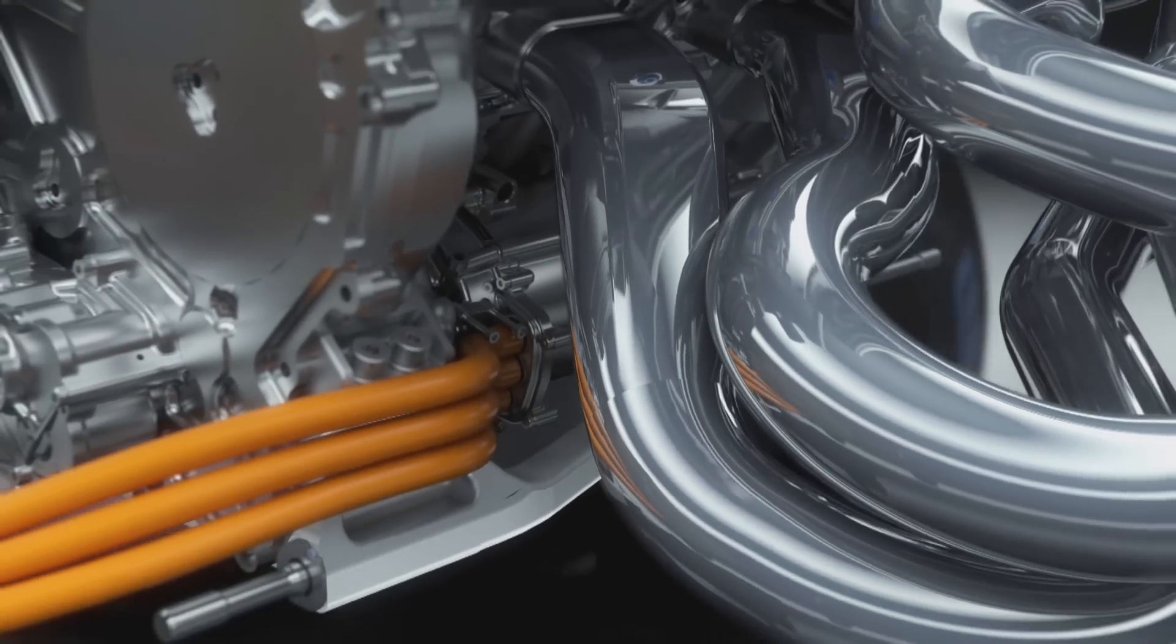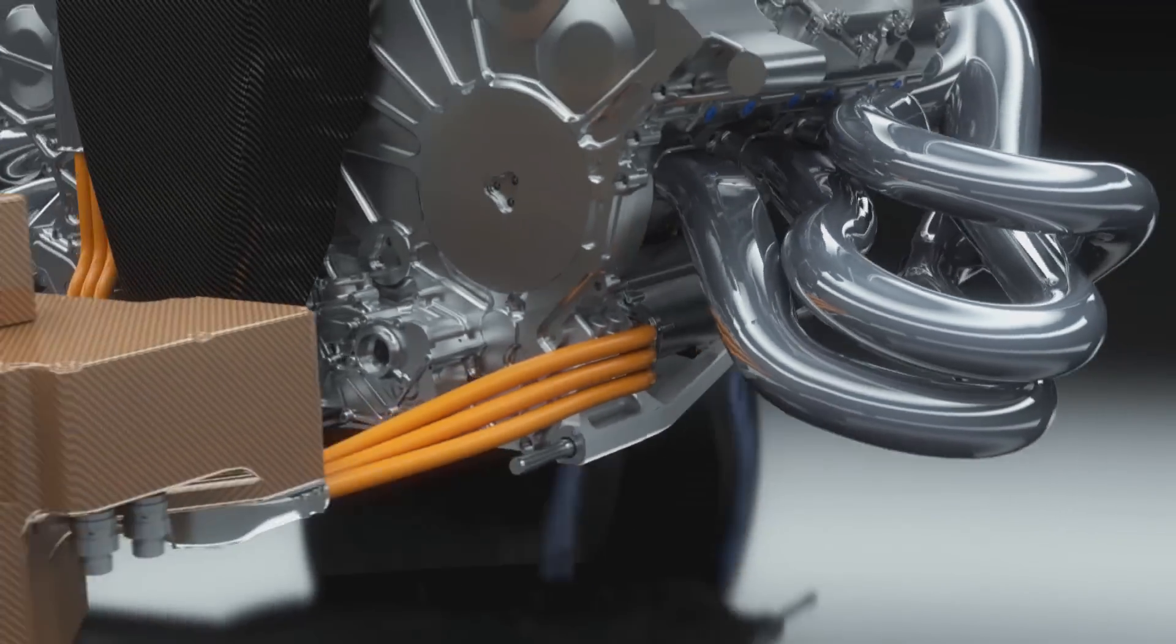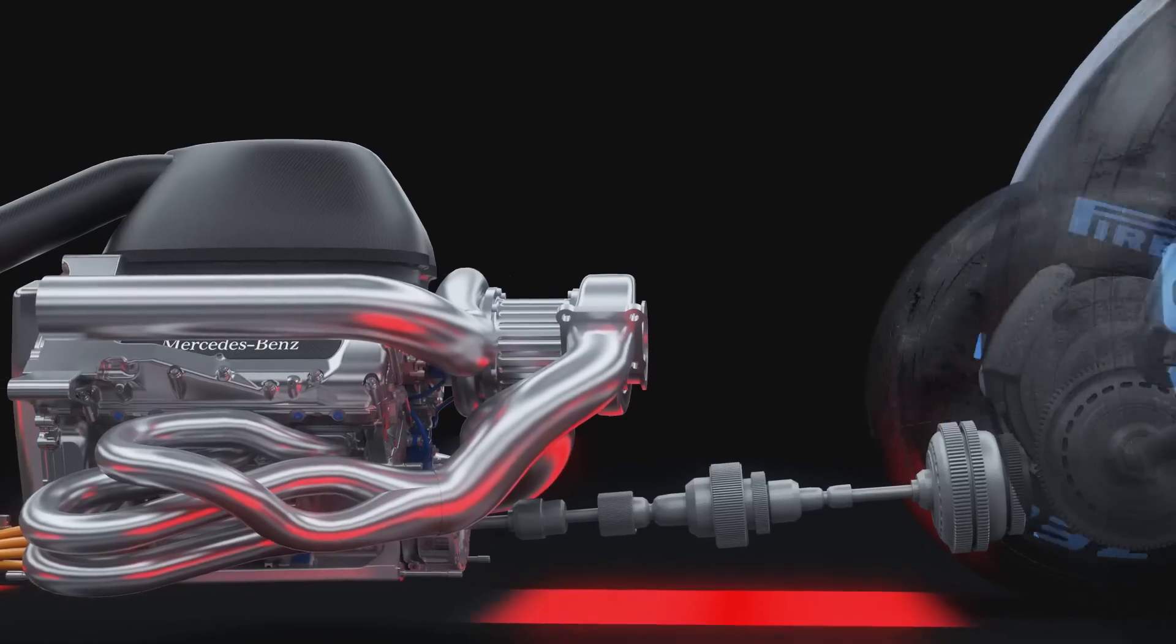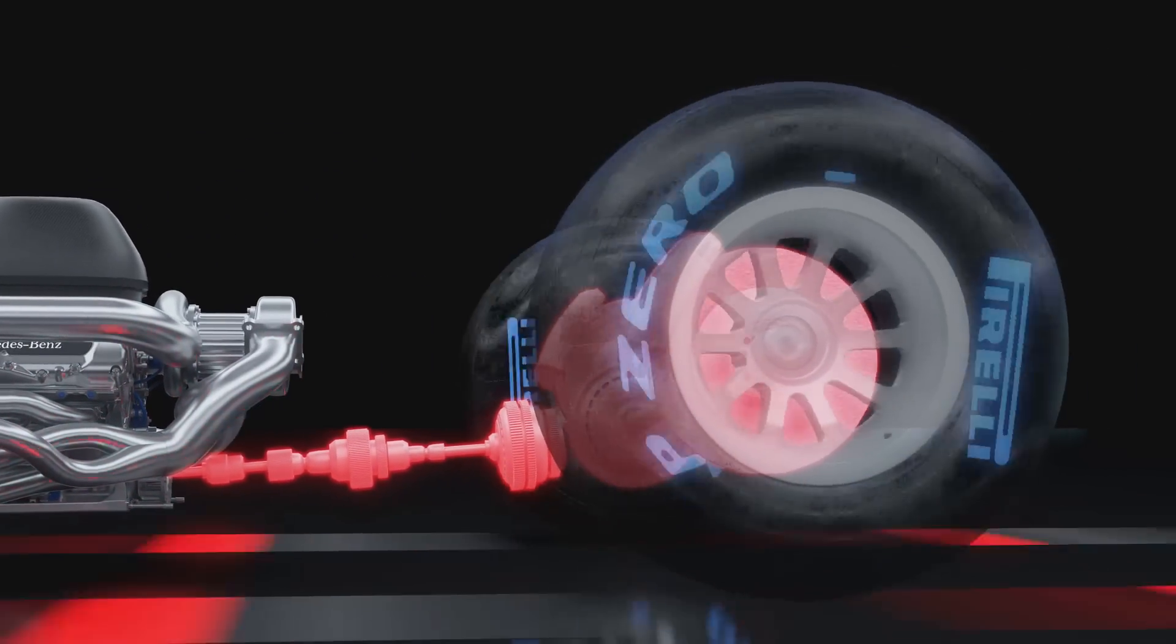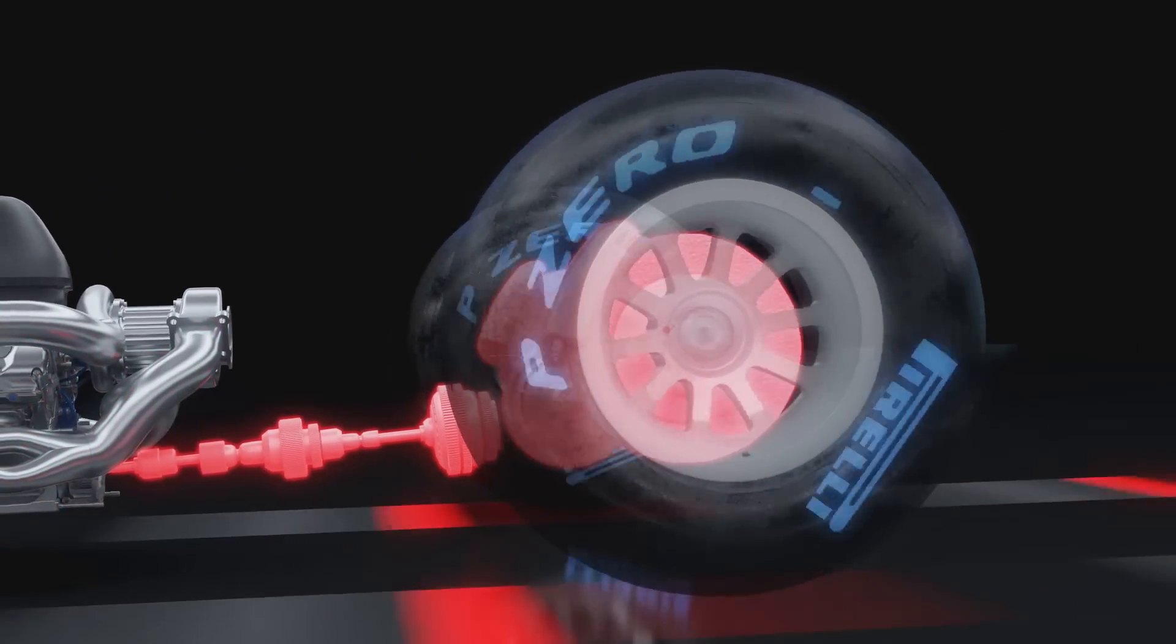Connected to the braking system and acting as a generator, the MGU-K can feed so much energy into the battery every lap that you could talk for 370 hours on your BlackBerry smartphone.